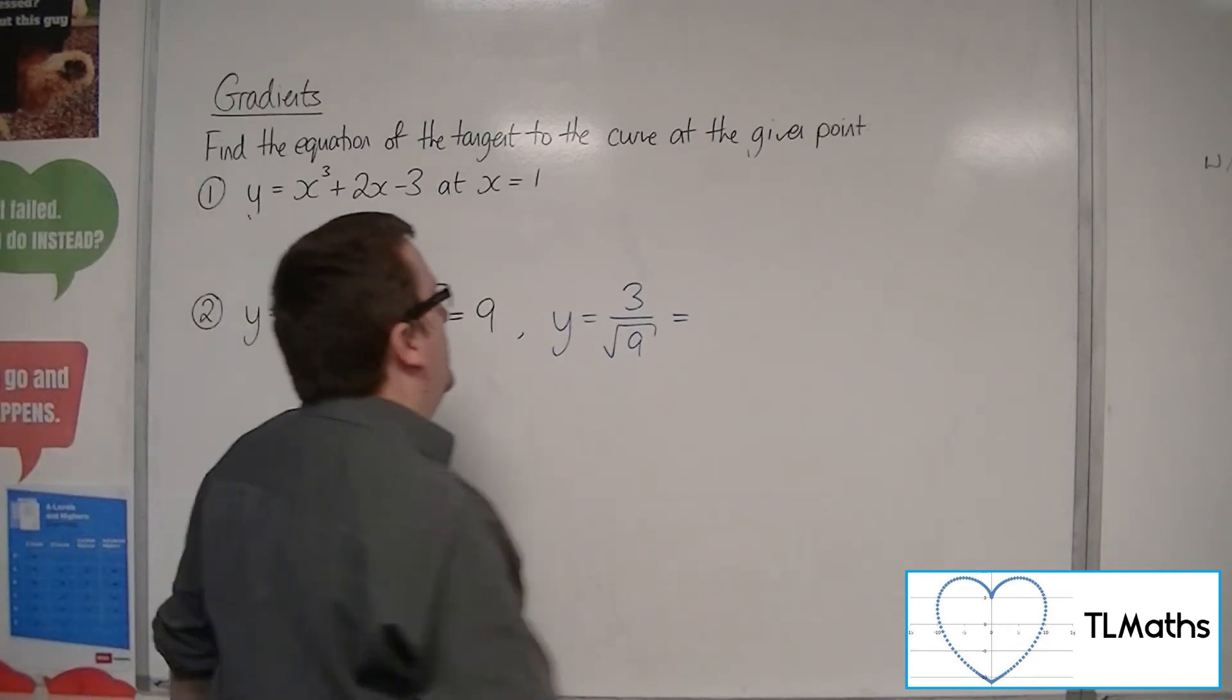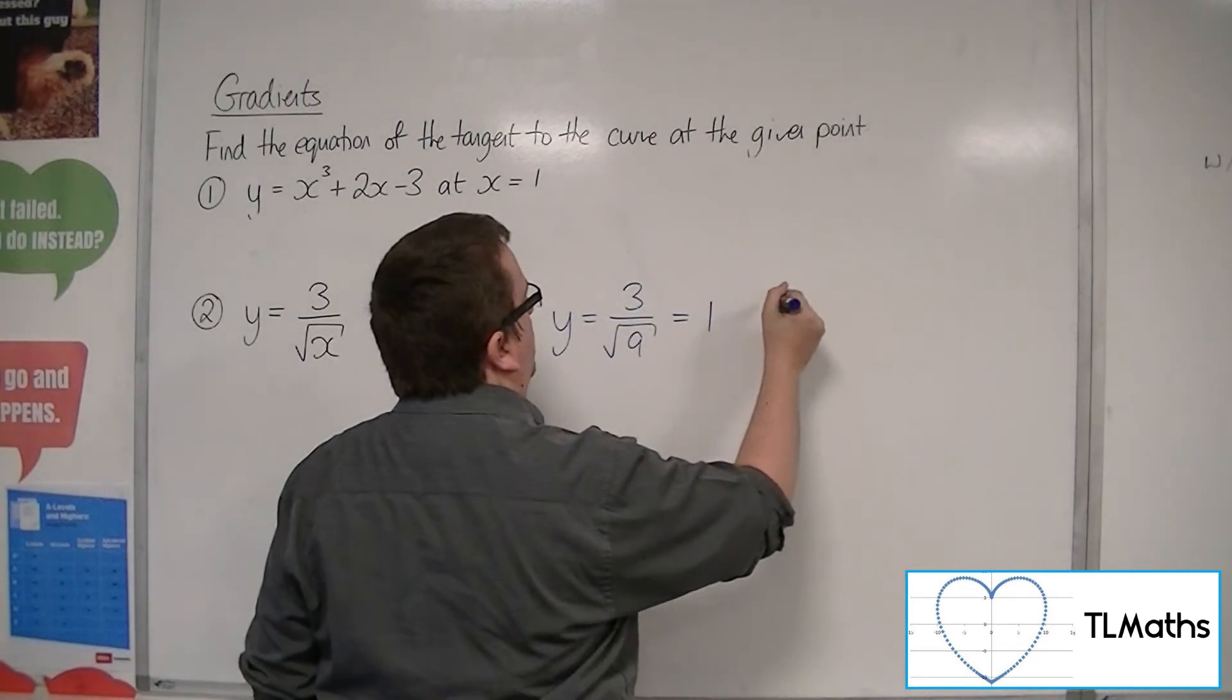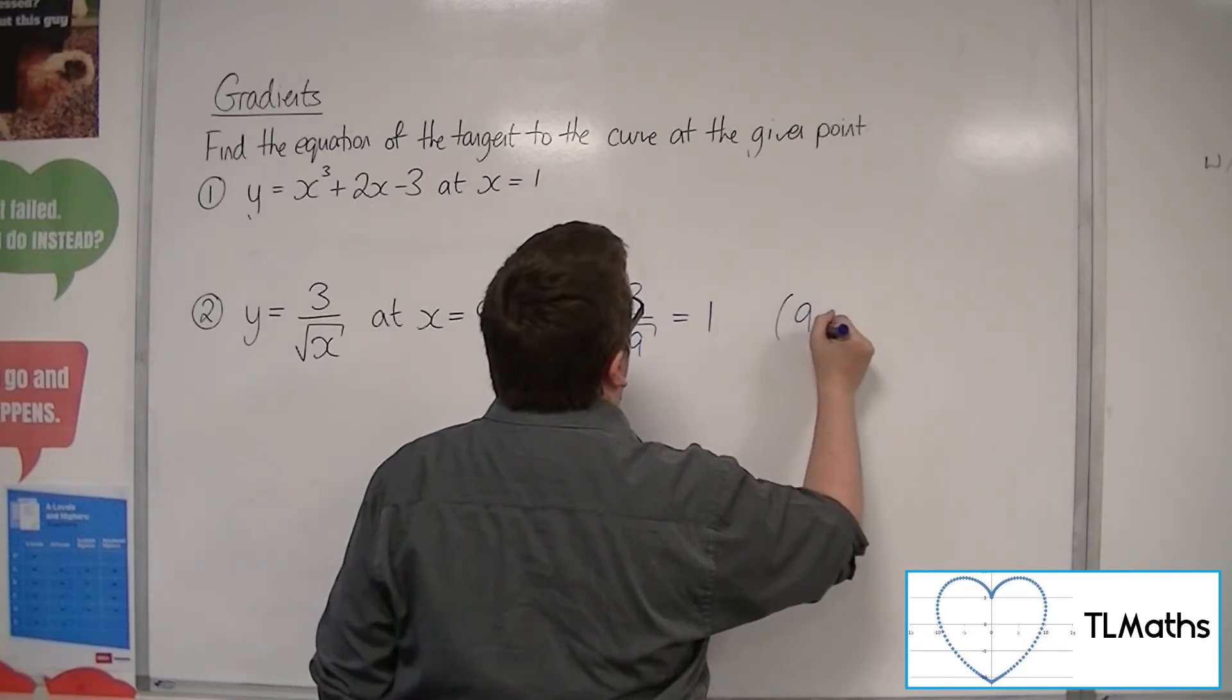So we've got 3 over 3, which is just 1. So the coordinate is 9, 1.